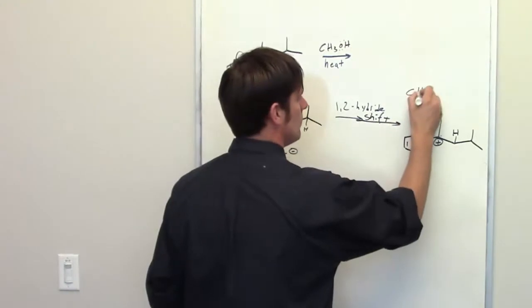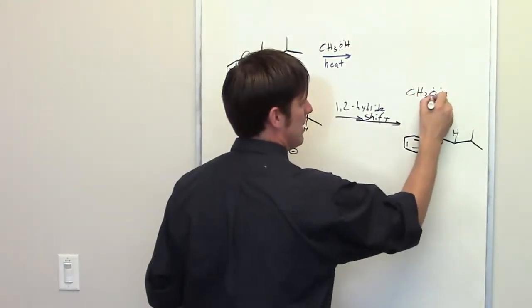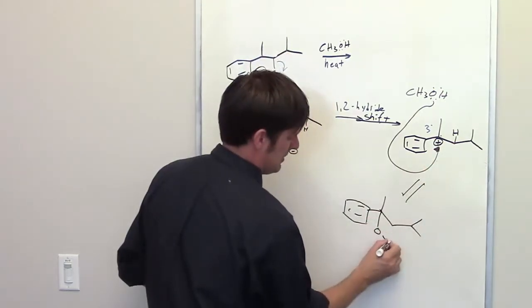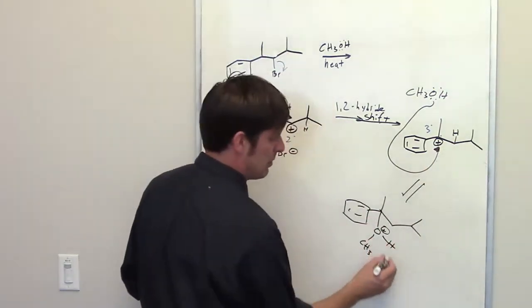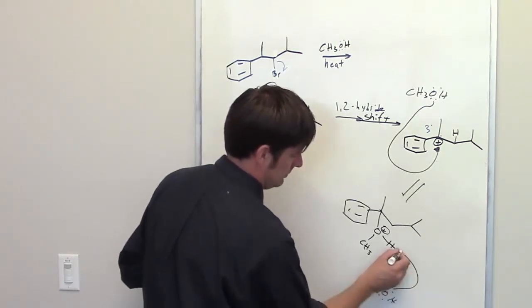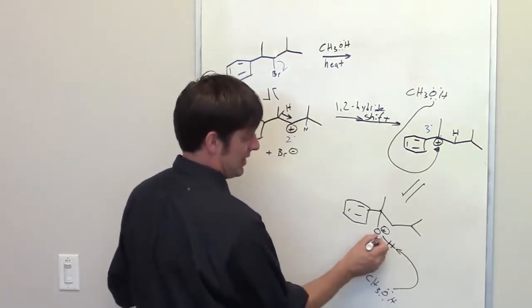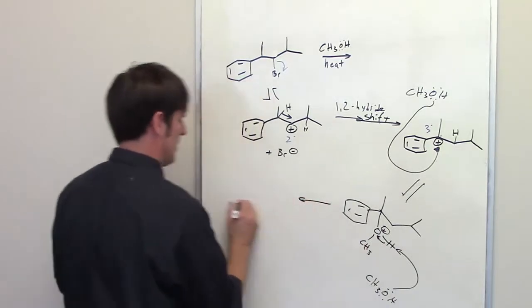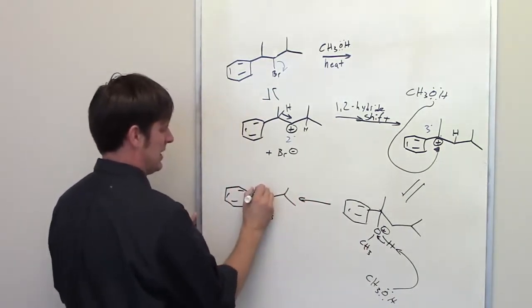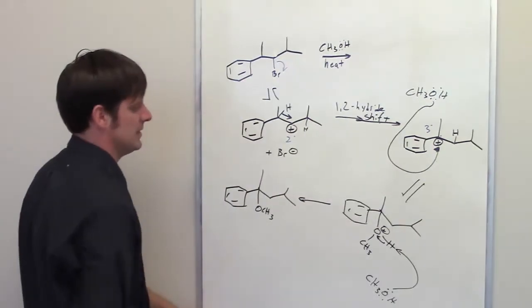So at this point, my nucleophile comes in here, this is methanol, it's going to come right into that hole, give me this, and then presumably another molecule of methanol, because it's a solvent and there's tons of it, is going to come in there, grab the hydrogen, dump those electrons in there, and give me my final product, where I've got my methoxy group right there, and my methyl group right there at the benzyl position.